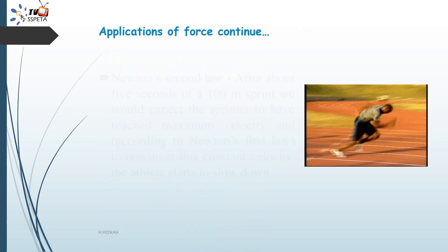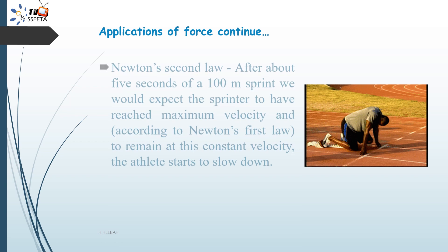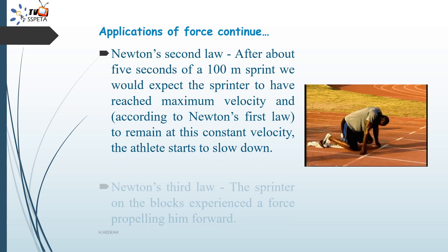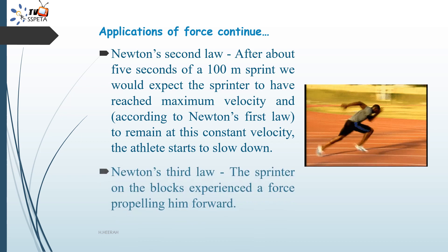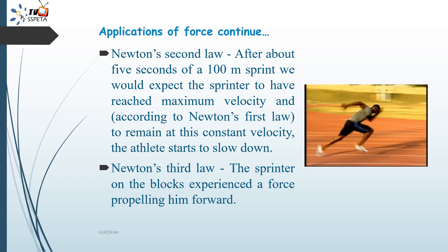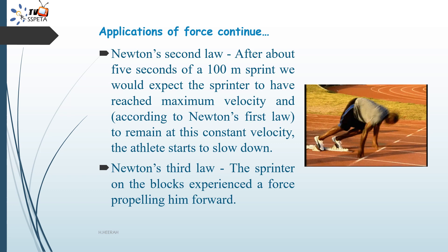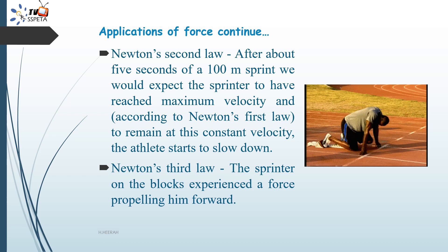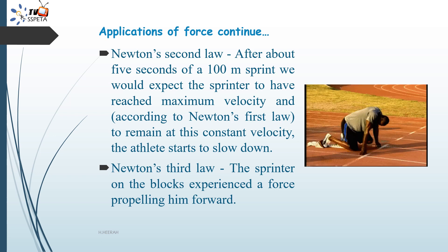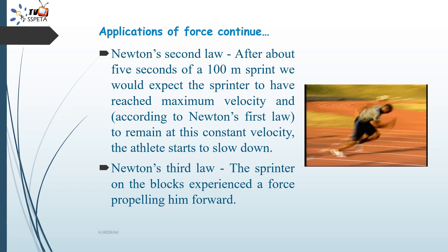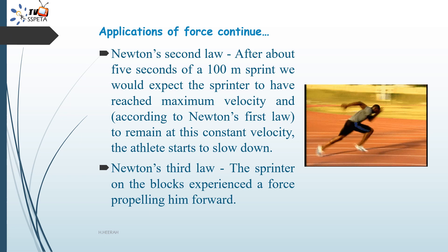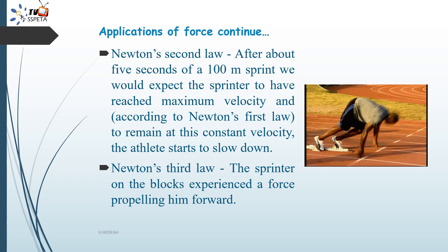Applying Newton's second law: after about 5 seconds of a 100m sprint, we would expect the sprinter to have reached maximum velocity, and to remain at this constant velocity the athlete starts to slow down. For Newton's third law: the sprinter on the blocks experiences a force propelling them forward.